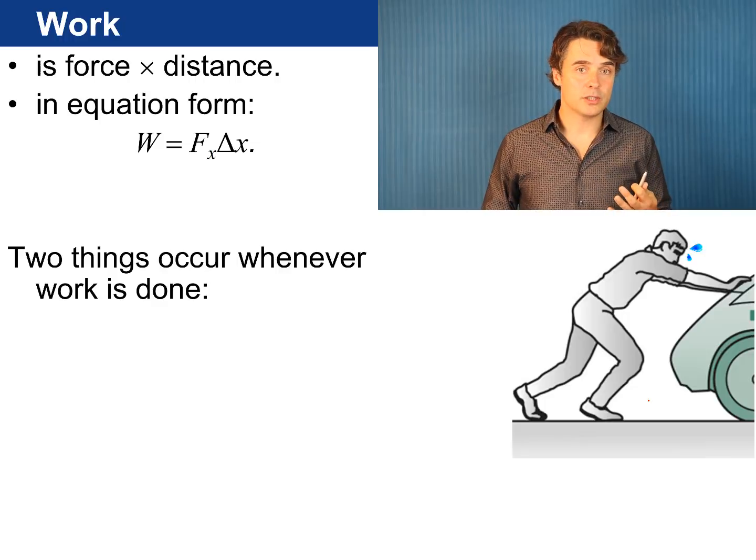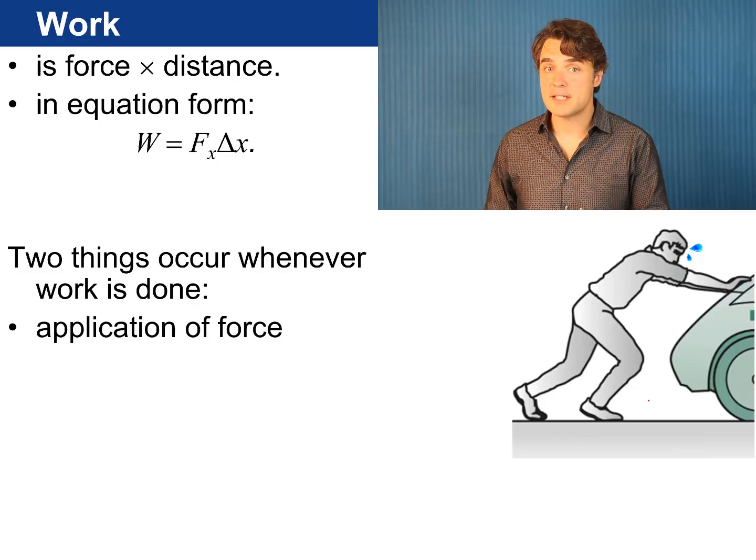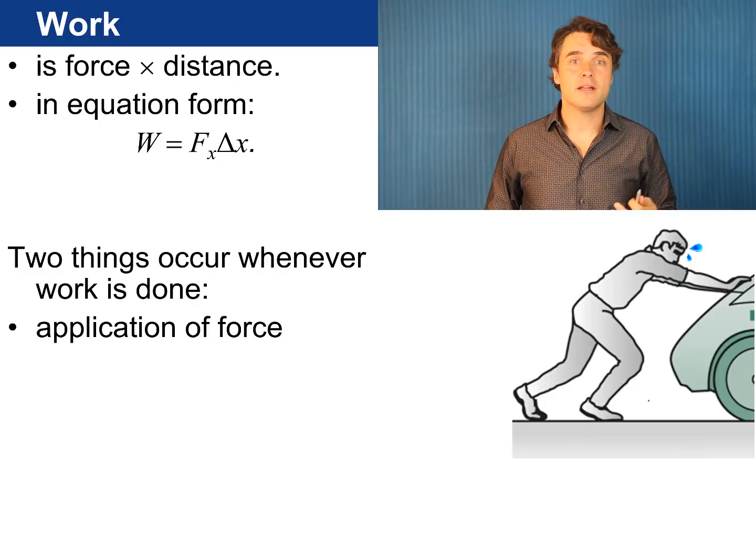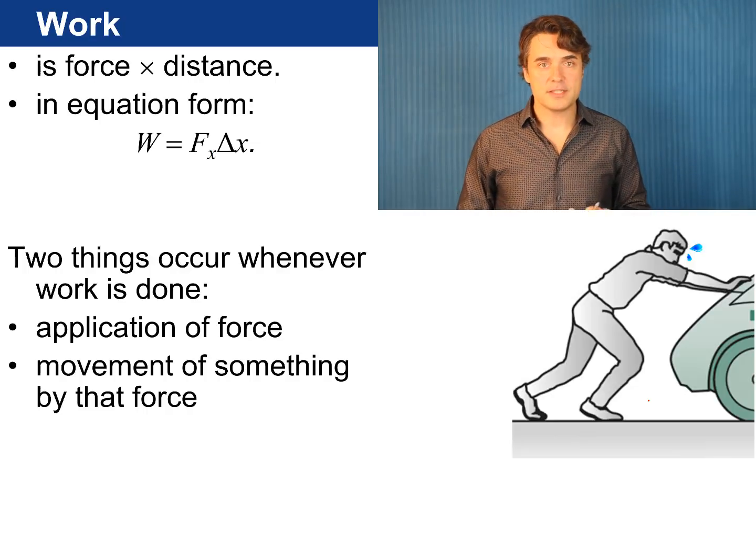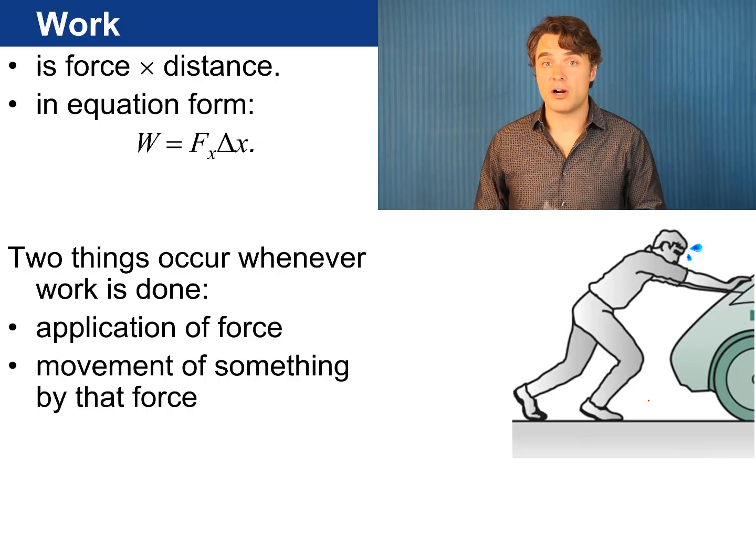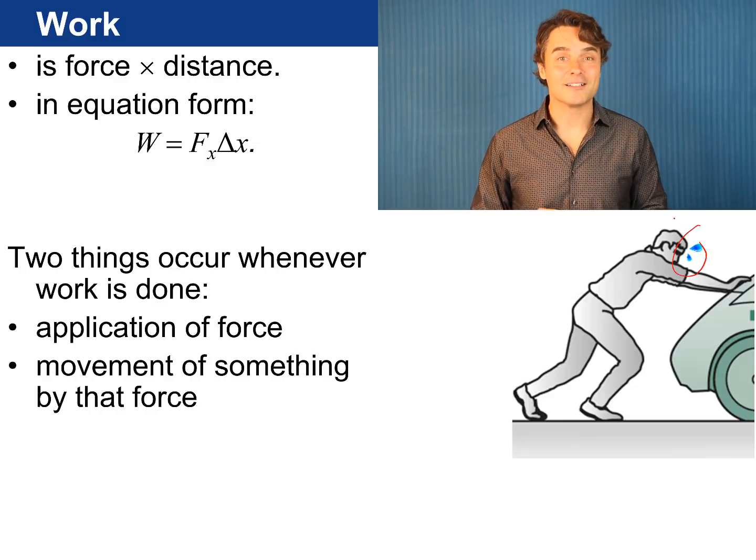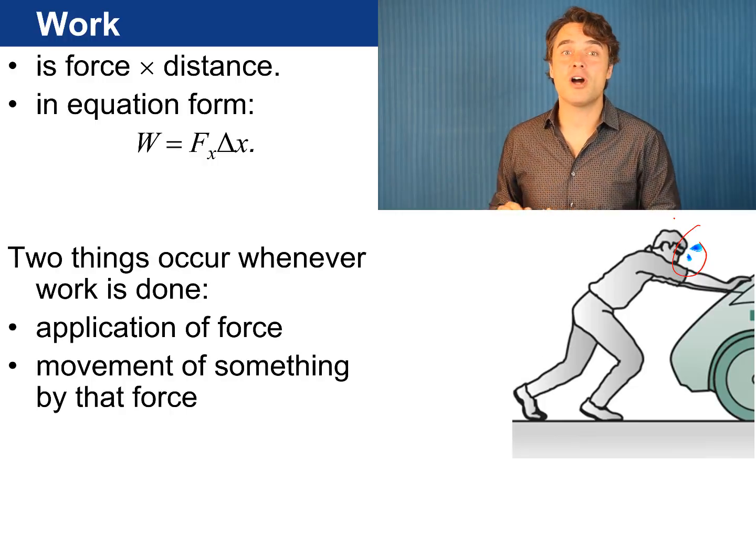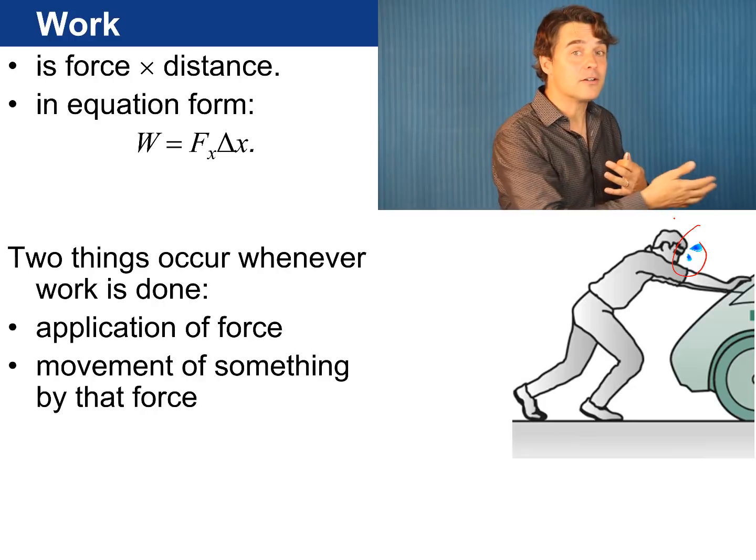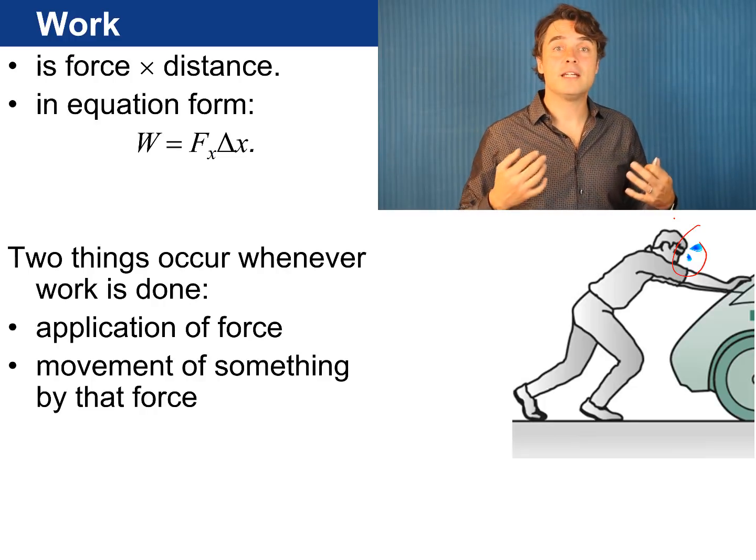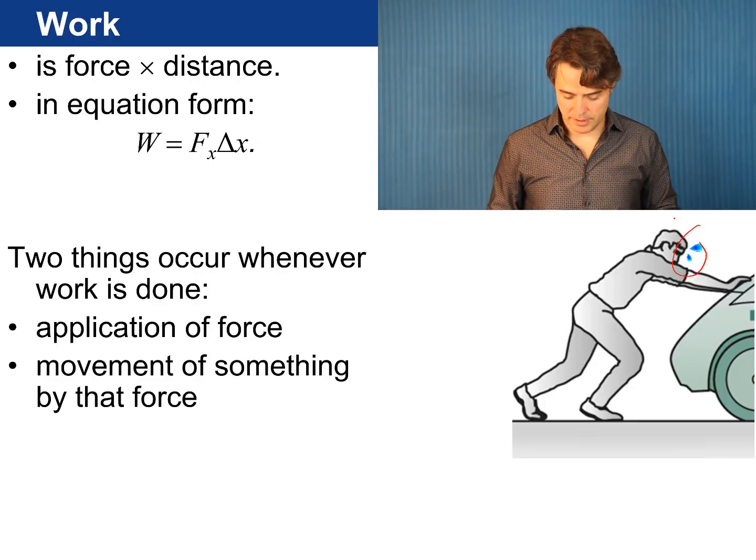So we can write W for work equals F sub x times delta x. So two things will occur every time work is done. A force will be applied to something and that something will move some distance. For example this guy is pushing the car along. He is doing work. If he pushes the car with a force of 10 newtons and the car moves 10 meters, then the amount of work he does is 10 newtons times 10 meters or 100 newton meters.